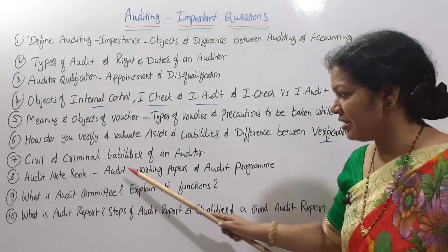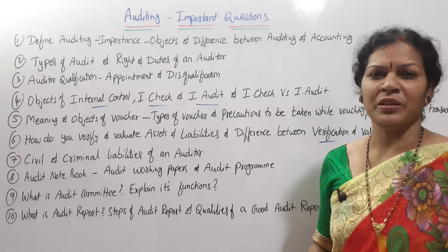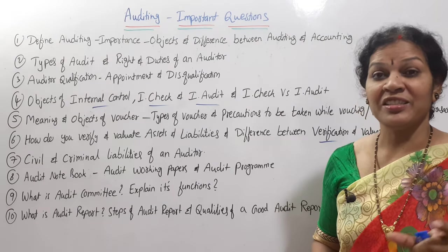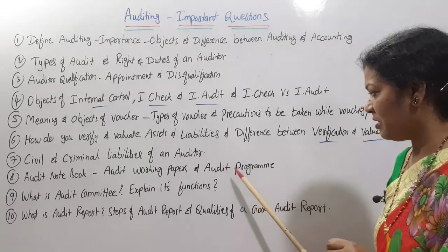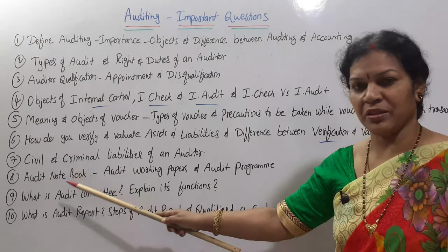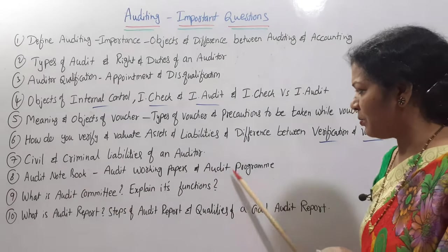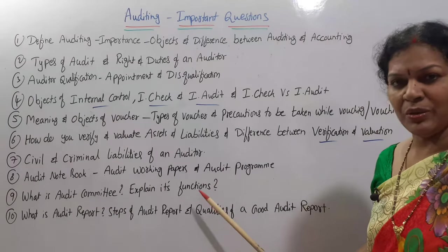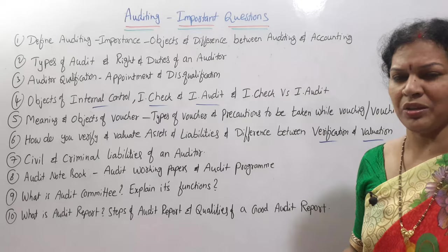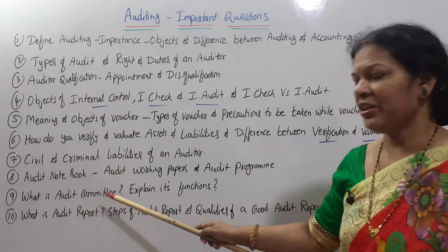Eighth question: audit notebook, audit working papers, and audit program. These three topics are most often expected as short answers, but audit program may sometimes appear as an essay. All three are easy to understand.